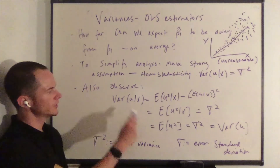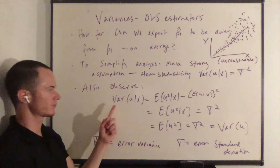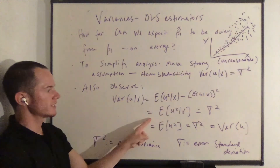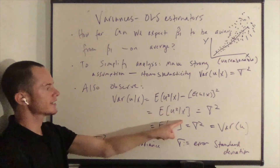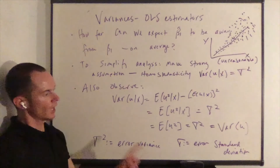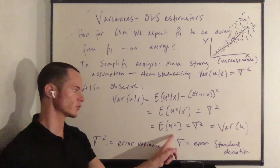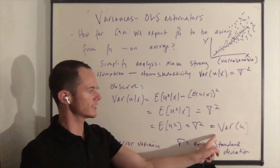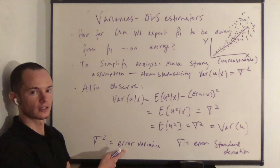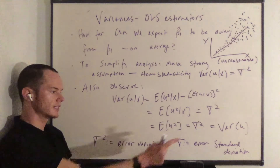Now also observe that the variance of u given x equals the expected value of u² given x — this comes from the definition of variance — and since the expected value of u given x is zero, this equals E[u² | x]. We have defined the variance of u given x as constant, equal to σ². From the result of the covariance between u and x being zero, this equals the expected value of u², which is σ². So σ² is the error variance of the population regression function, and σ is the error standard deviation.